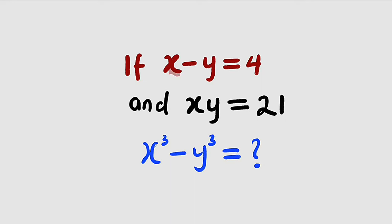We are given that if x minus y is equal to 4, and x multiplied by y is equal to 21, we are asked to evaluate x cubed minus y cubed, which is the difference of two cubes.